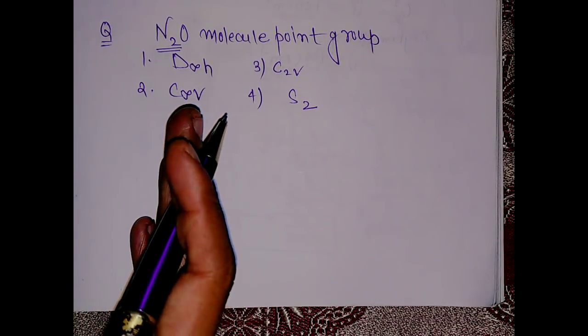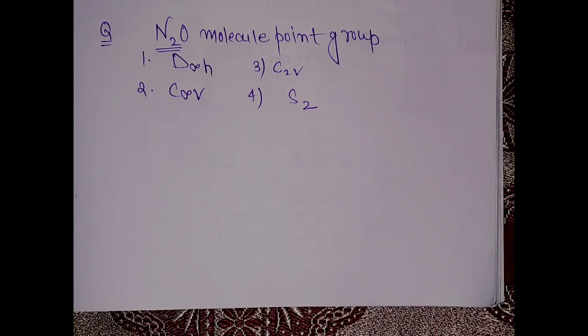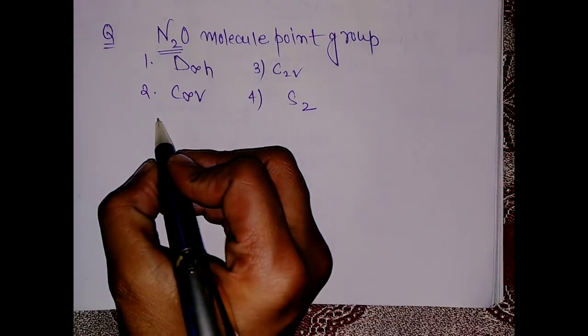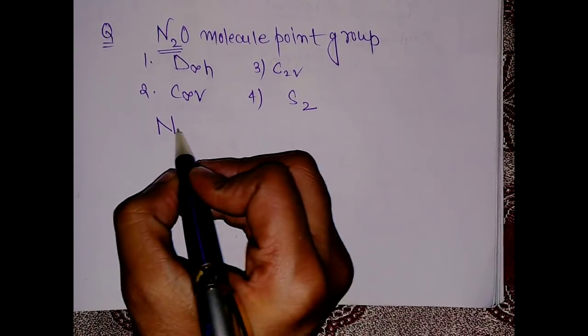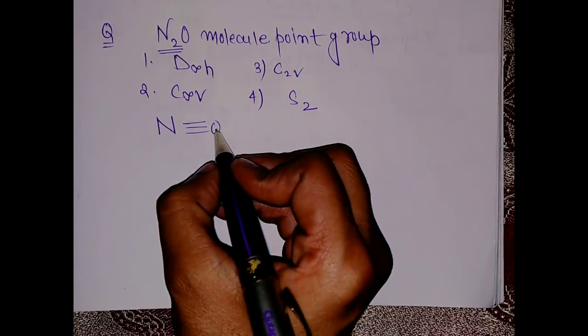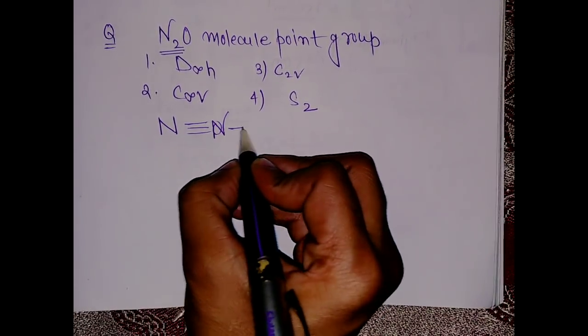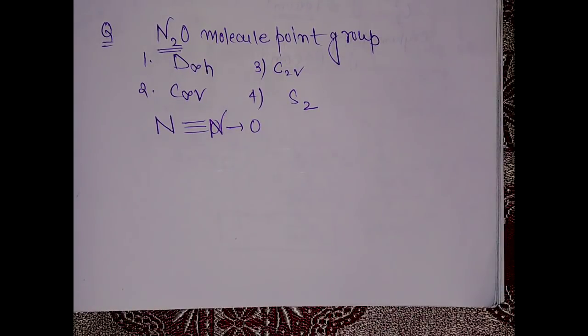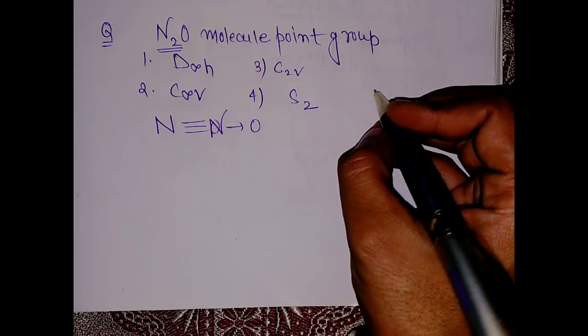Before knowing the point group, first of all you should know what is the structure of this N2O molecule. So this is nothing but N triple bond N, and this is coordinated to oxygen.